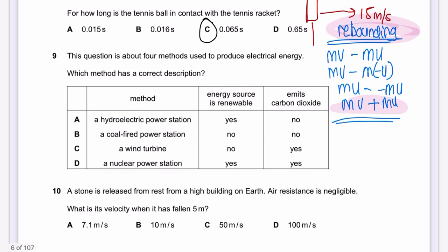Question 9: Which method of producing electrical energy has a correct description? Hydroelectric power uses water, which is renewable, and does not emit carbon dioxide — so option A is correct. A coal-fired power station emits CO₂. A wind turbine does not emit CO₂. A nuclear power station produces nuclear waste, not renewable energy in the traditional sense.